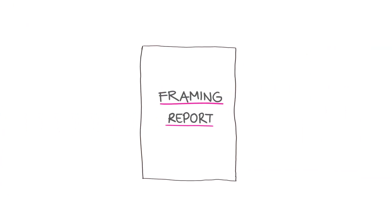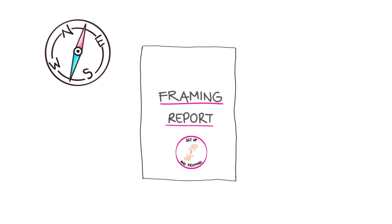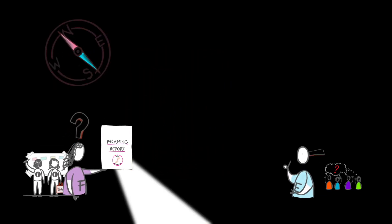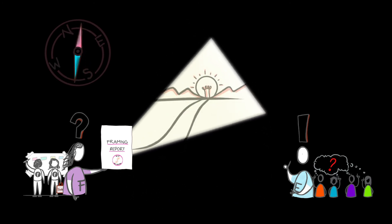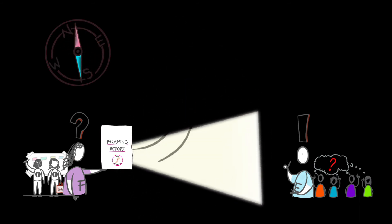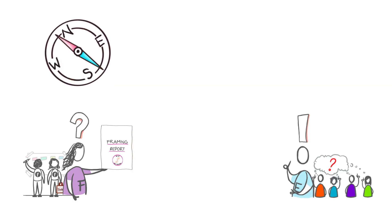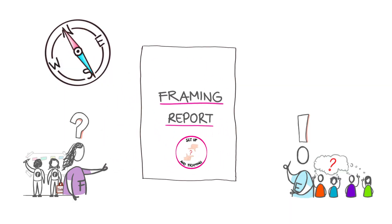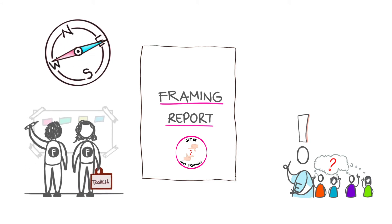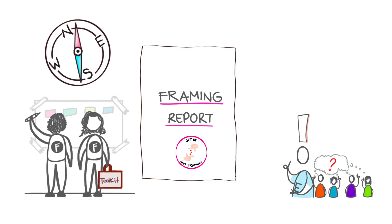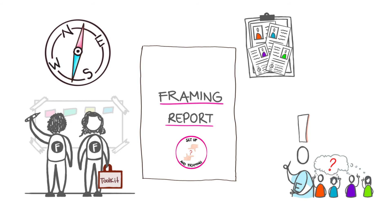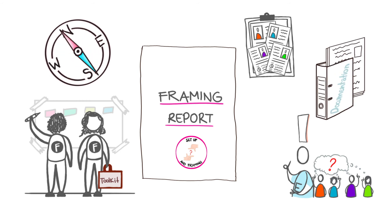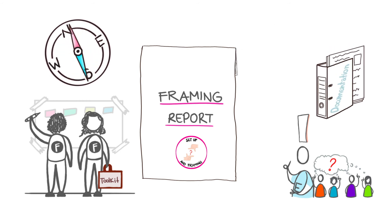The framing report is the navigation guide for the learning process exercise. It allows the key actors and the facilitation team to have all of the elements in a single document that will guide the learning process, the reason it's being implemented, and how it will be implemented. This report is prepared by the facilitation team. It should consolidate and organise the information gathered from the framing interviews, as well as that from the document review process.